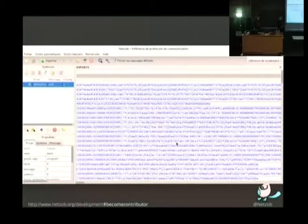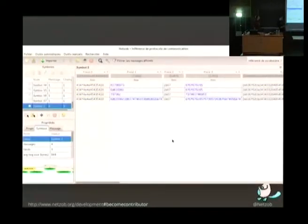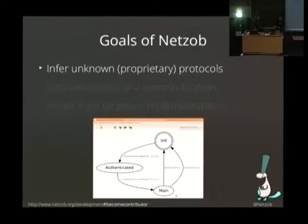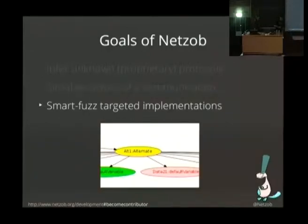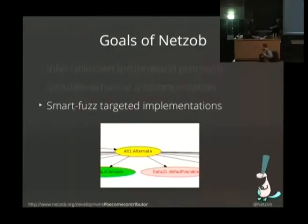You apply algorithms we have implemented into Netzob which allow to transform your flows into messages and fields and to align them in order to understand the semantic and attributes of the protocols. There are three main goals for Netzob. The first one is to allow to infer an unknown or proprietary protocol. It also allows to simulate the protocols once you've reversed it. Finally it allows to include mutations into your simulations to do some fuzzing for security reasons.